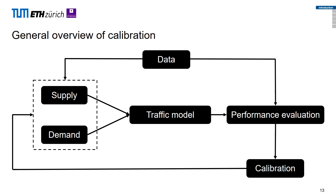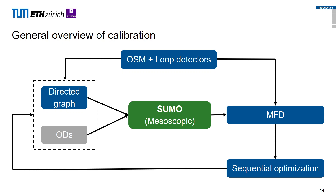After having supply and demand, here is a general overview of calibration for any traffic simulation. We feed that information to a traffic model — analytical or simulation-based — and evaluate its performance based on some goodness of fit. A calibration component, normally an optimization algorithm, fine-tunes the input parameters. In this work, our supply is a directed graph from OSM, our demand comes in time-varying OD format, we use SUMO's mesoscopic model, evaluate performance using the macroscopic fundamental diagram (MFD), and calibrate using a sequential model-based optimization algorithm.